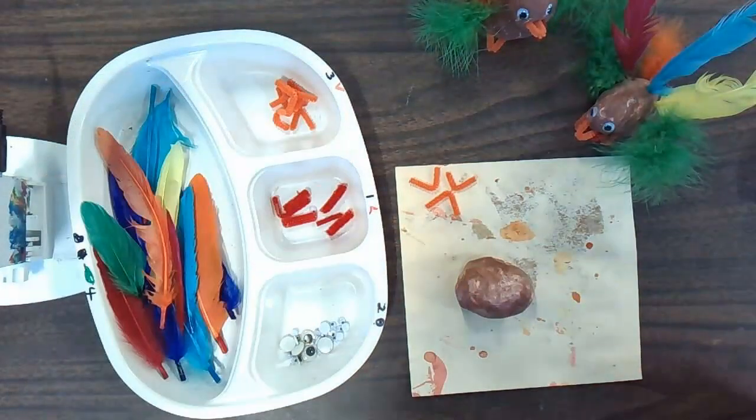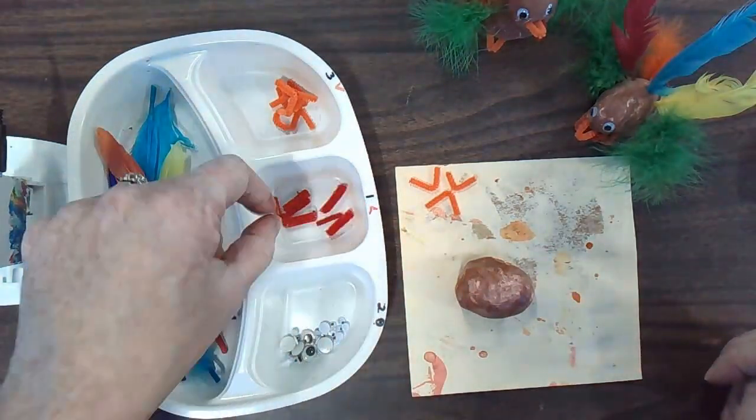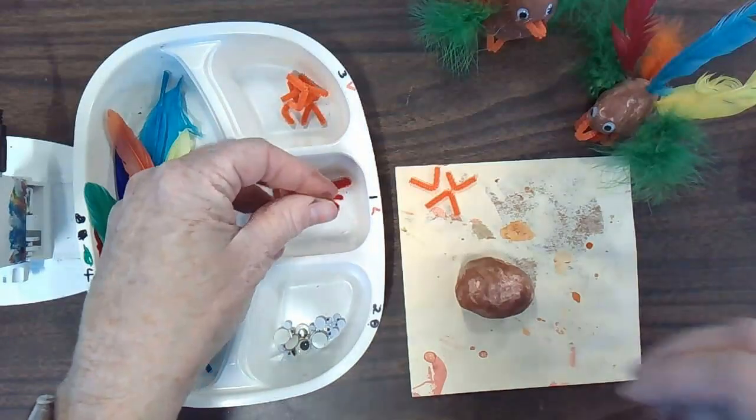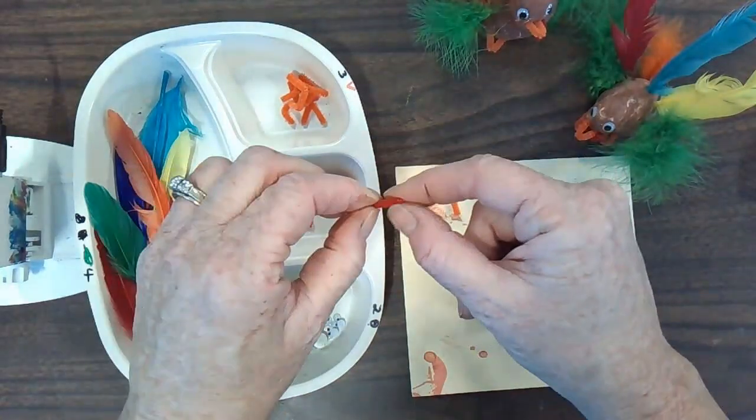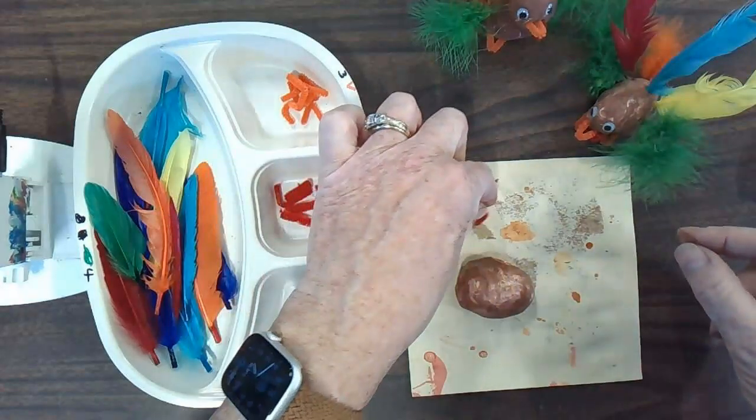One, two, three orange Vs. One red L. Sometimes they're not bent. You can bend it yourself to make it like an L.